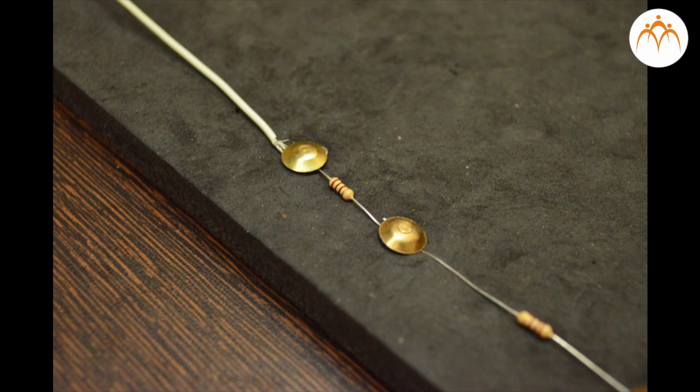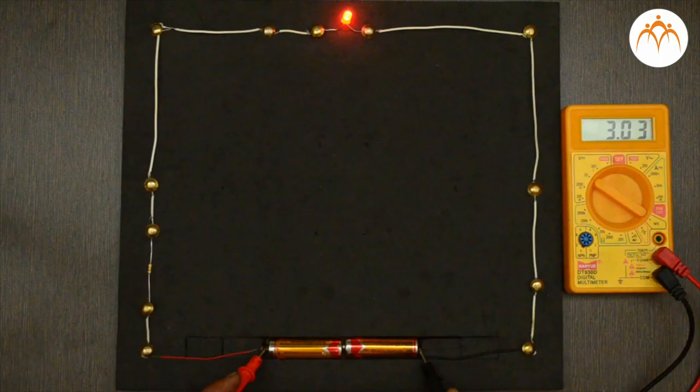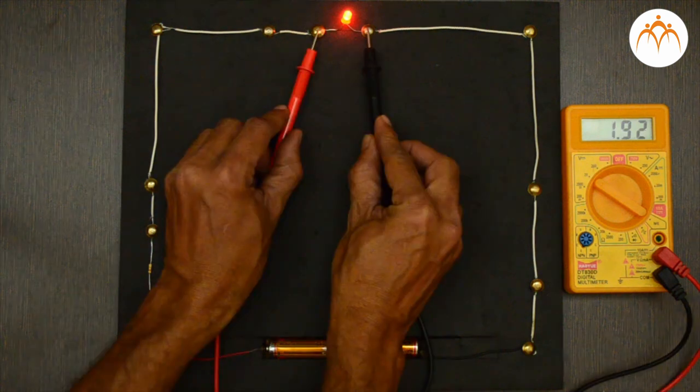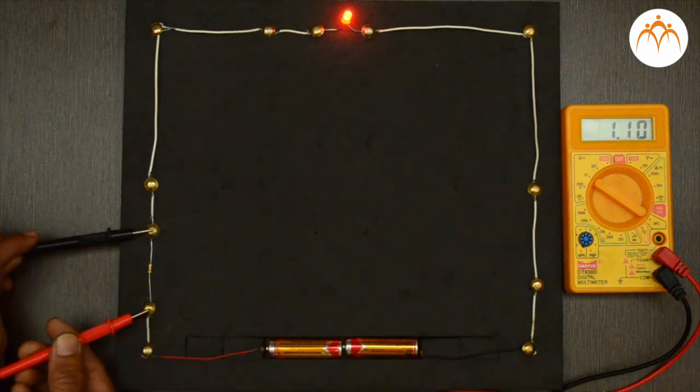Let's measure the potential difference across various components. It is 3 volts across power source, 1.92 volts across LED, and 1.1 volts across resistor. The sum of these two is approximately equal to total voltage drop across power source.